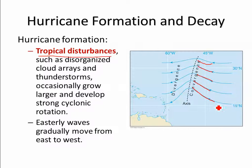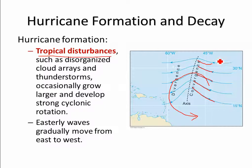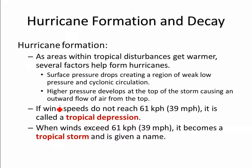They start as thunderstorms and begin to develop some cyclonic rotation because of the Coriolis effect. These waves are called easterly waves, and they're generally moving from east to west because of the trade winds. As these tropical disturbances develop, the surface pressure drops, creating a low pressure system that supports that cyclonic circulation.